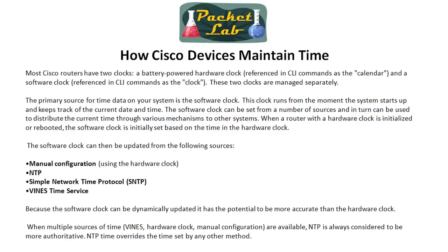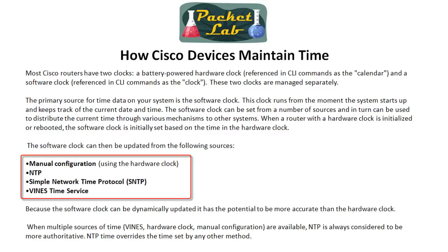The software clock can be updated from the following sources: manual configuration, NTP which is what we're going to look at today, and SNTP — Simple NTP, which is NTP without the bells and whistles used on certain lower-level platforms. And then there's Vines Time Service, which is part of the Banyan Vines protocol. We're not going to look at that at all — it's something you won't see a lot in the wild.